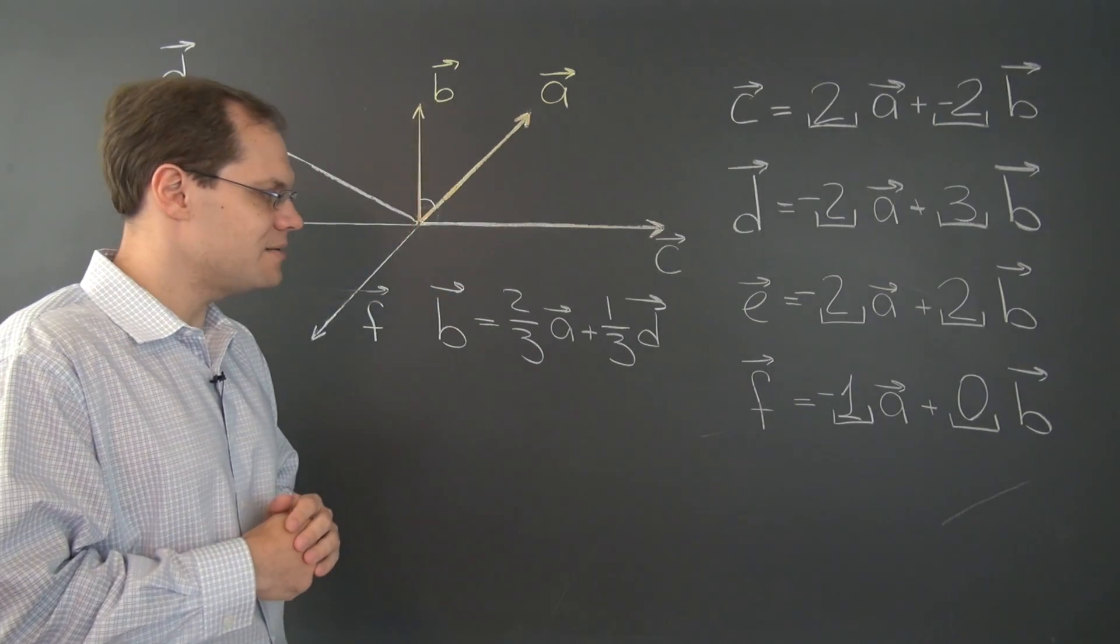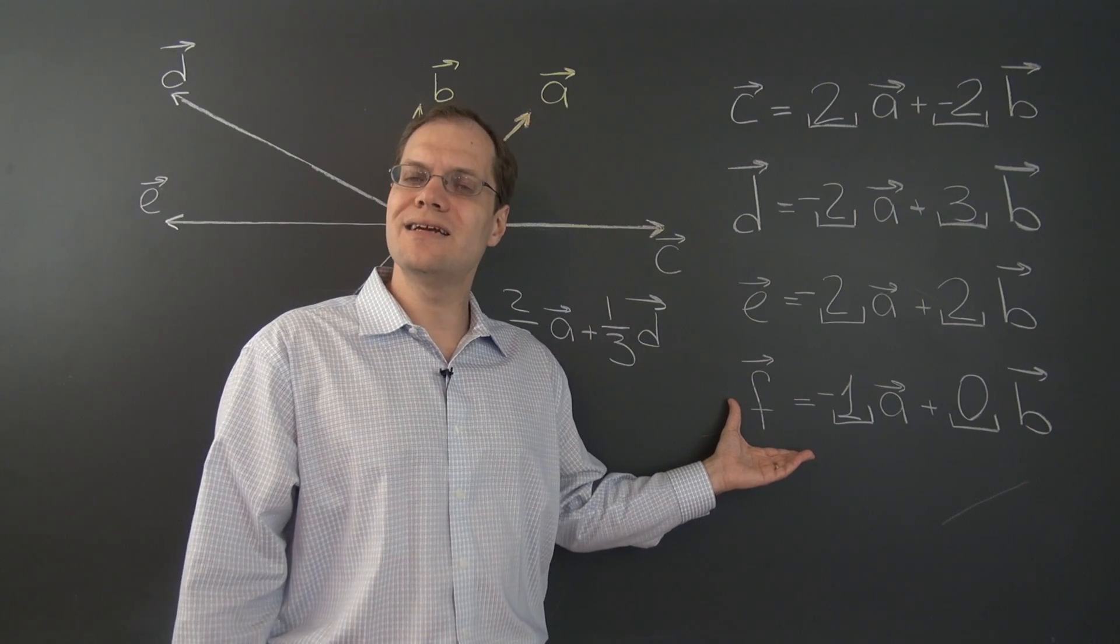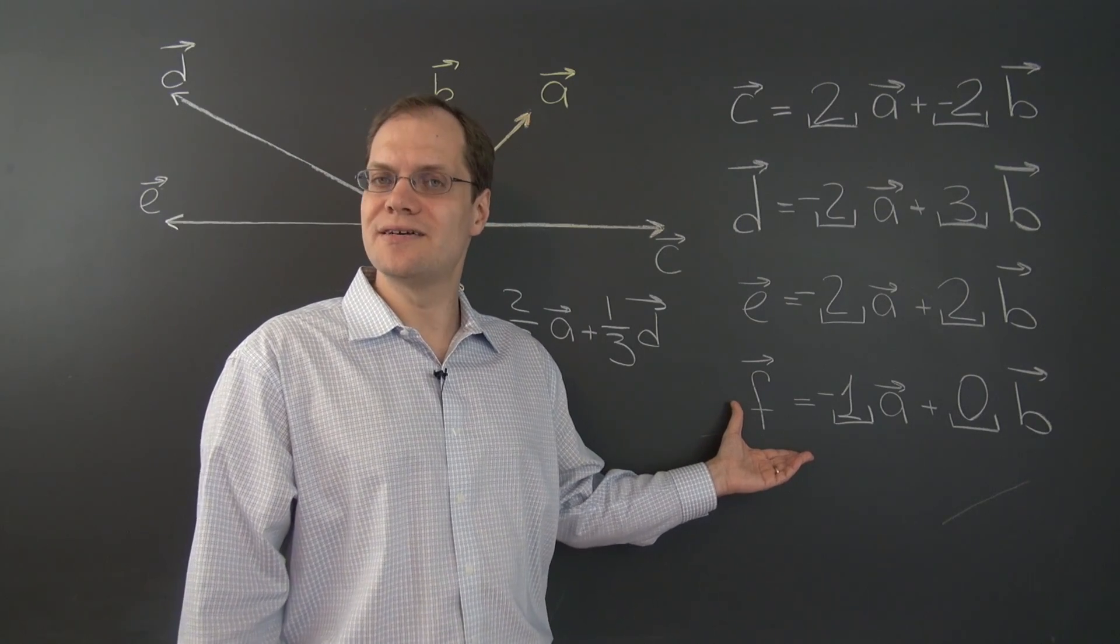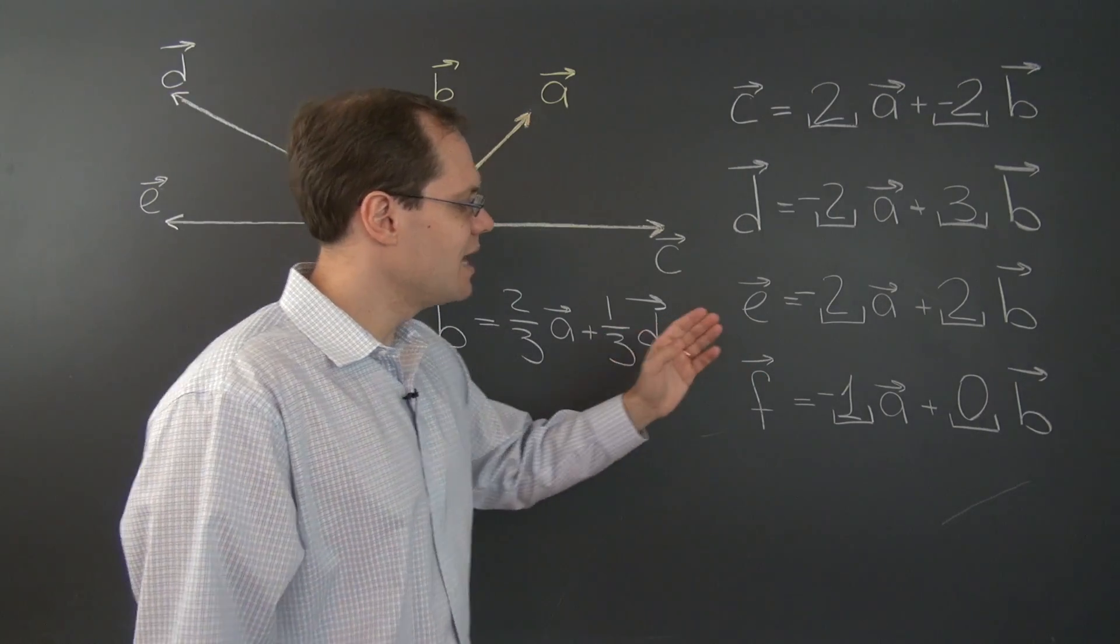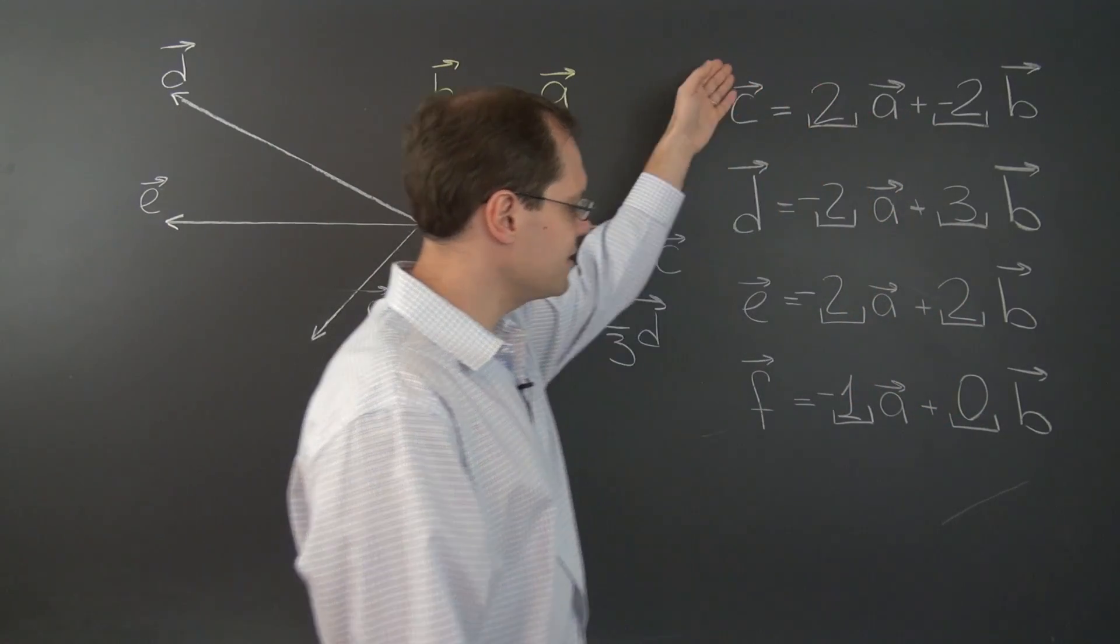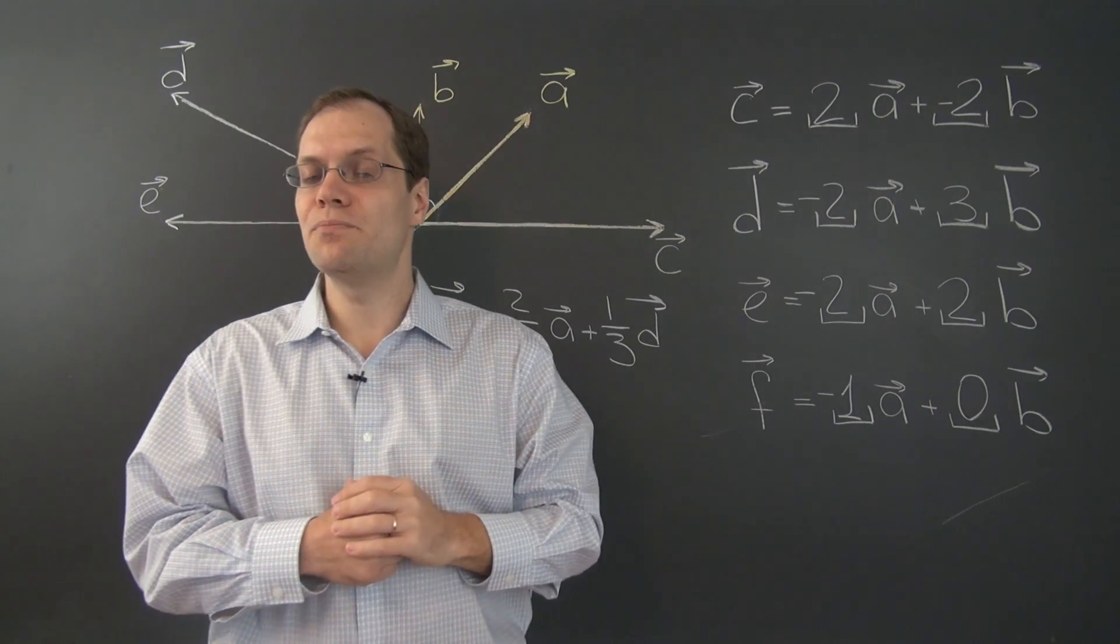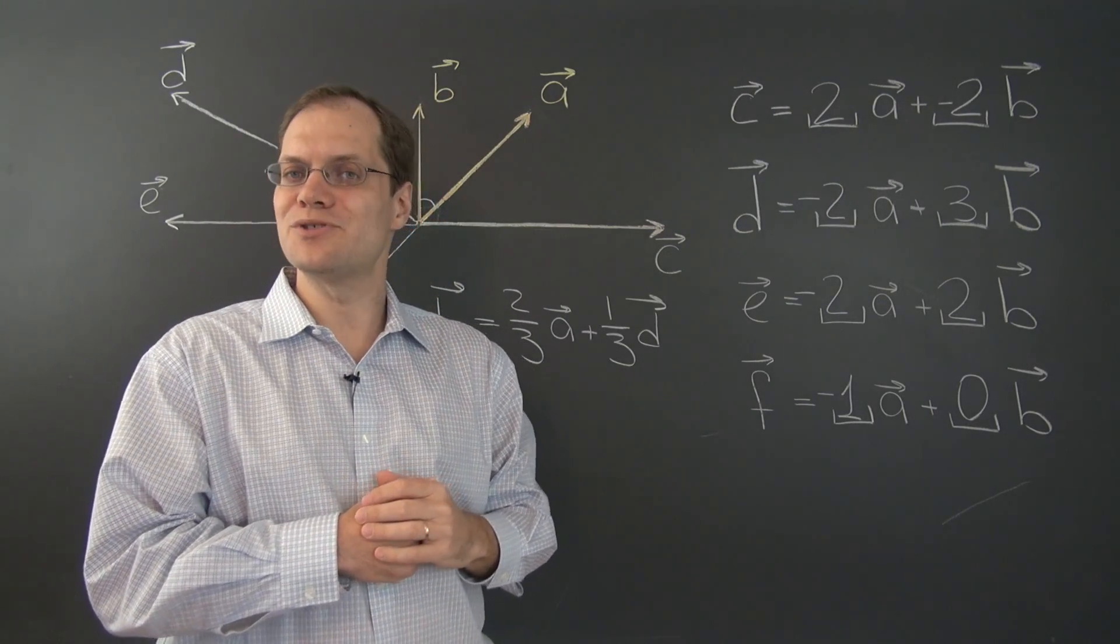But I'm leaving you, once again, with the same question as before. Are these linear combinations unique? Or could there have been another way to choose these numbers to get the same results? A very important question for one of the most important discussions coming up soon.